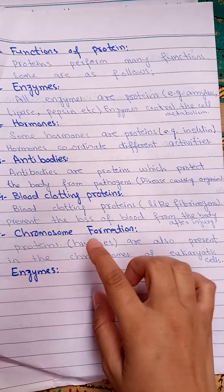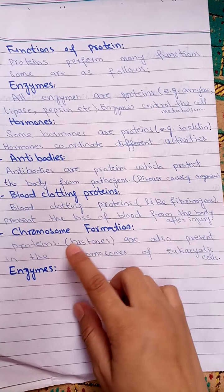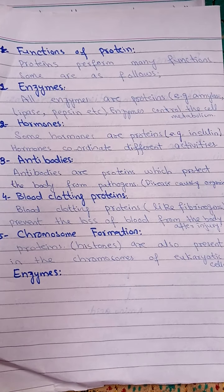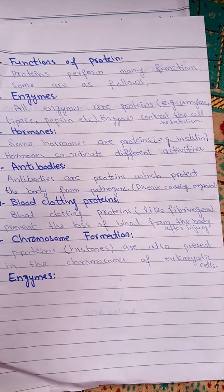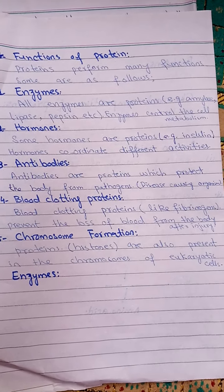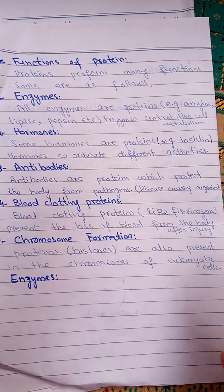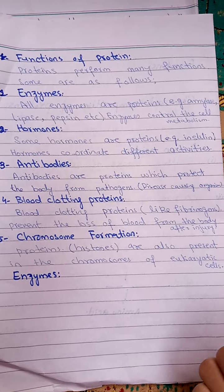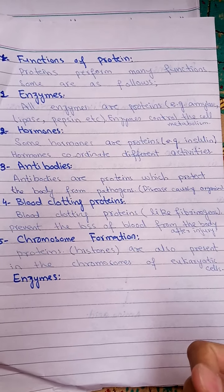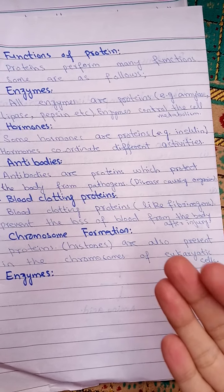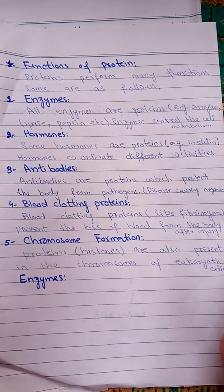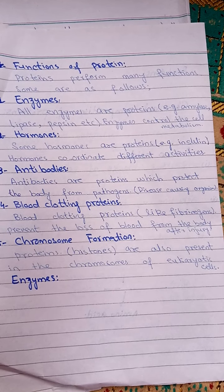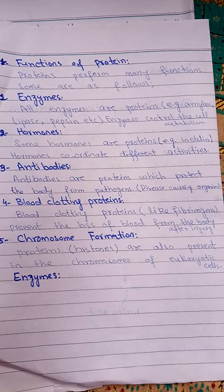Blood clotting proteins such as fibrinogen prevent the loss of blood from the body after injury — they initiate and sustain the clotting process. Patients who cannot produce fibrinogen in their body will not experience proper blood clotting. Additionally, chromosomal proteins called histones are also present in the chromosomes of eukaryotic cells.